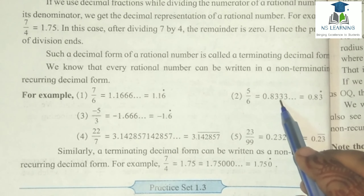Agar hum 7 by 4 divide karte hain, aur hume uska answer jo decimal form mein hoga aur remainder 0 hoga. Is condition mein hume jo division hoga, woh stop ho jayega.